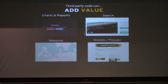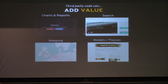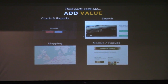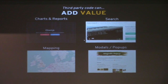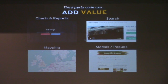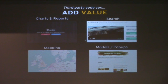Third-party code can add a lot of value to your software. For instance, charts and reports. Search is a big thing — Elasticsearch is something you're seeing come more and more into the WordPress world. Mapping: there's Google Maps, everybody knows about Google Maps. There's Leaflet, there's OpenStreetMaps — lots of different options for mapping.